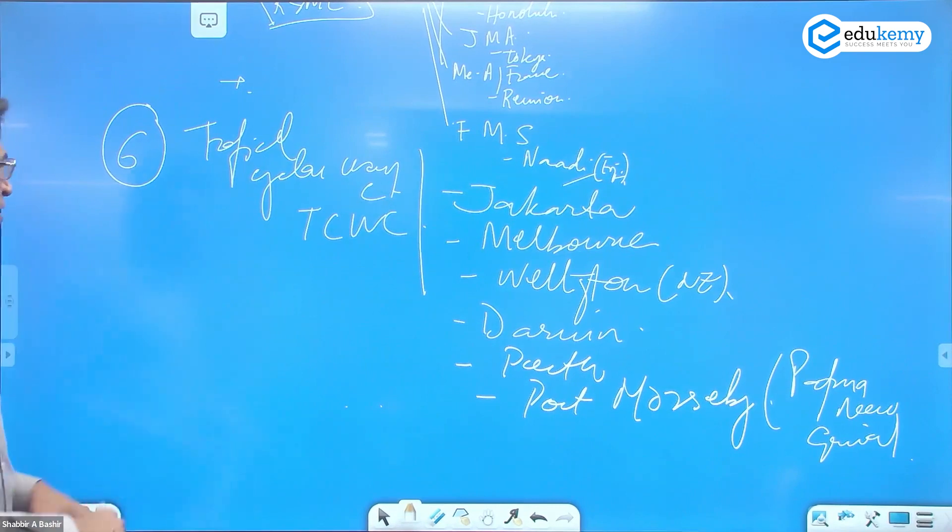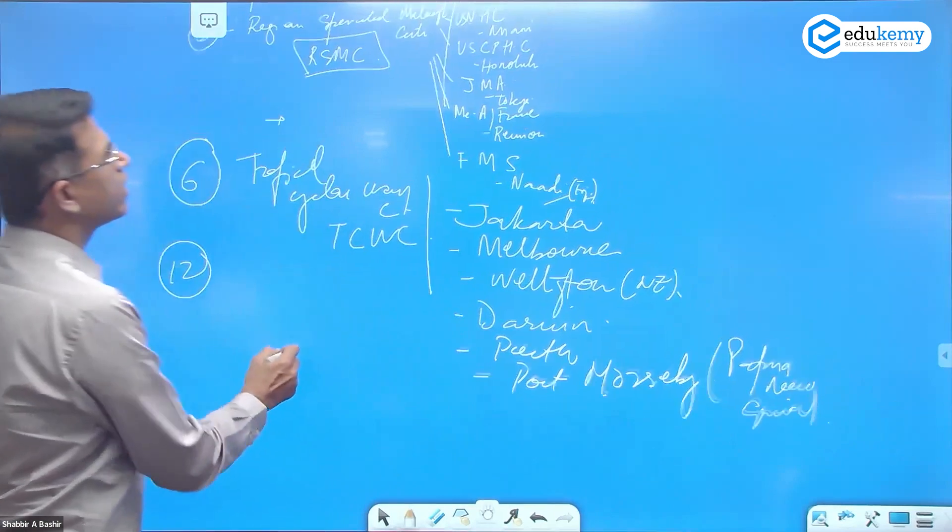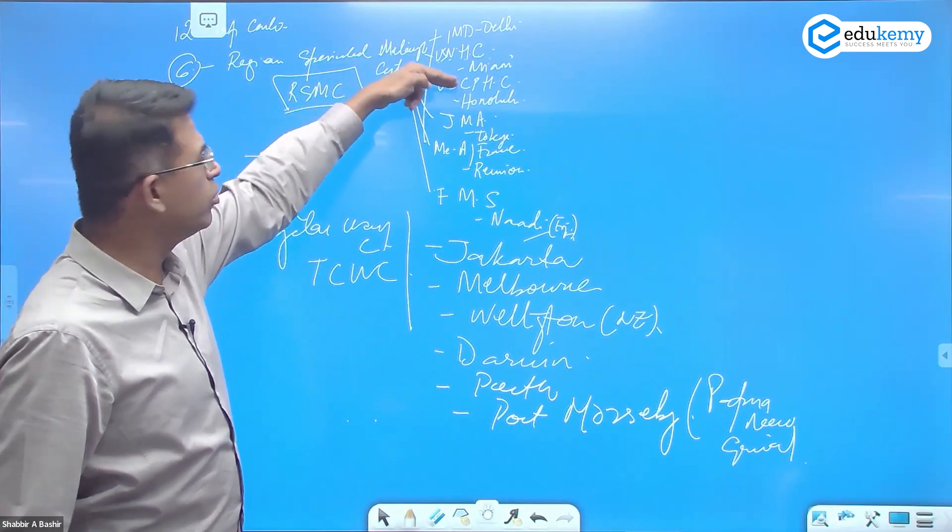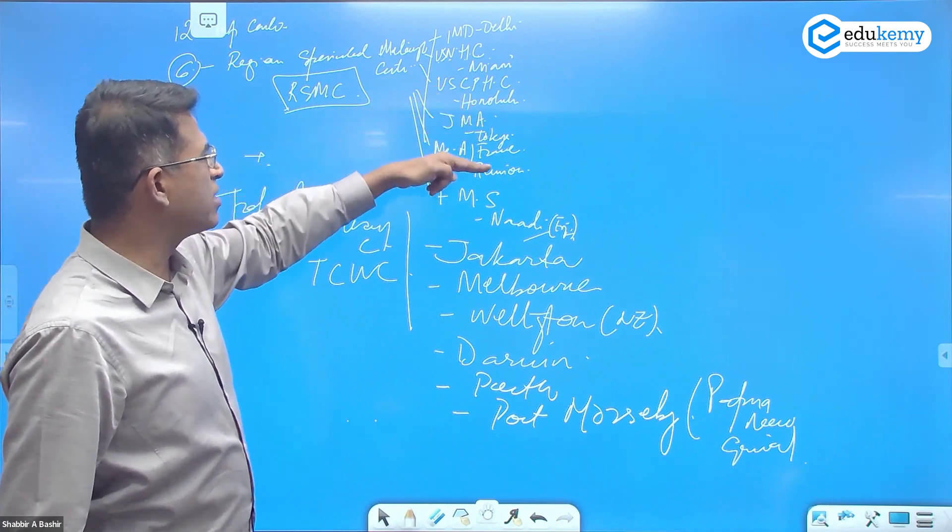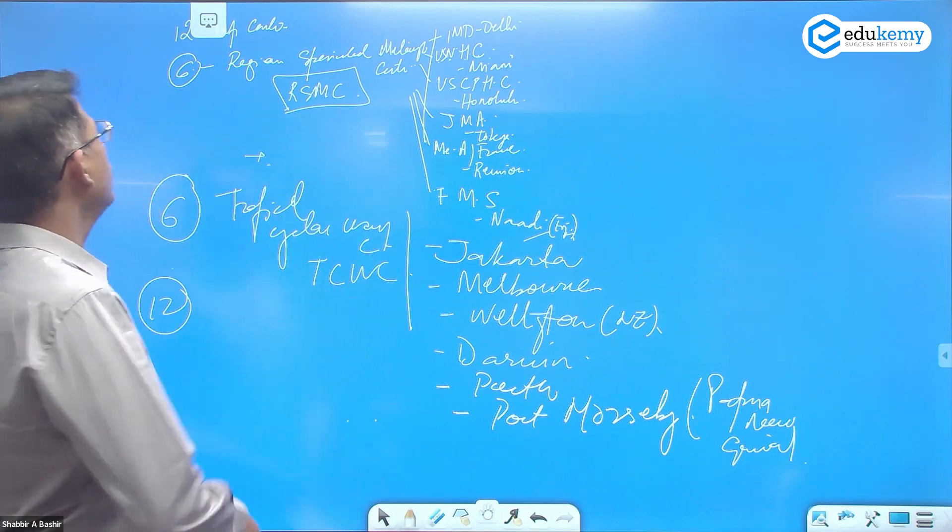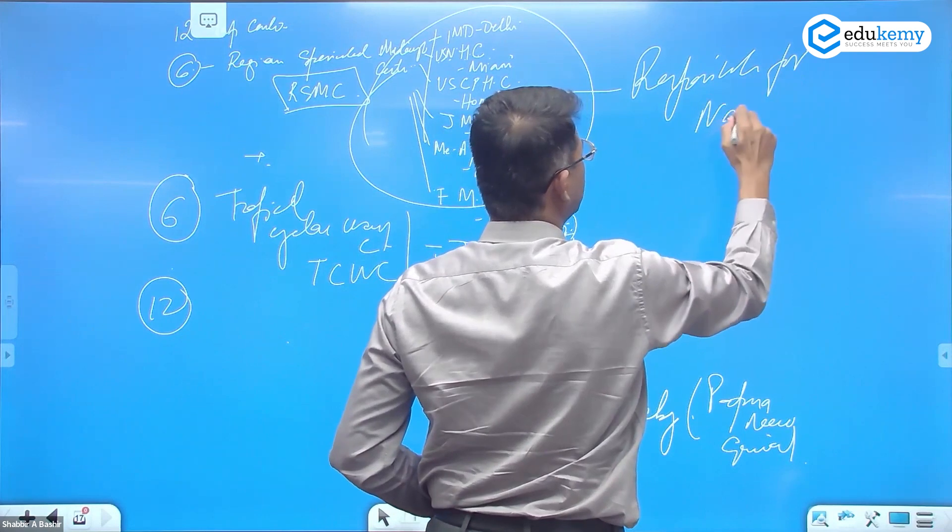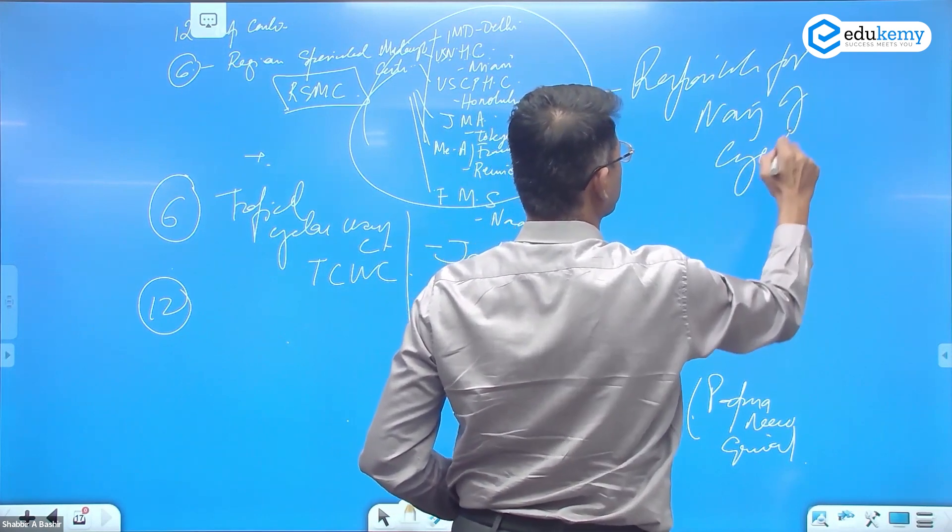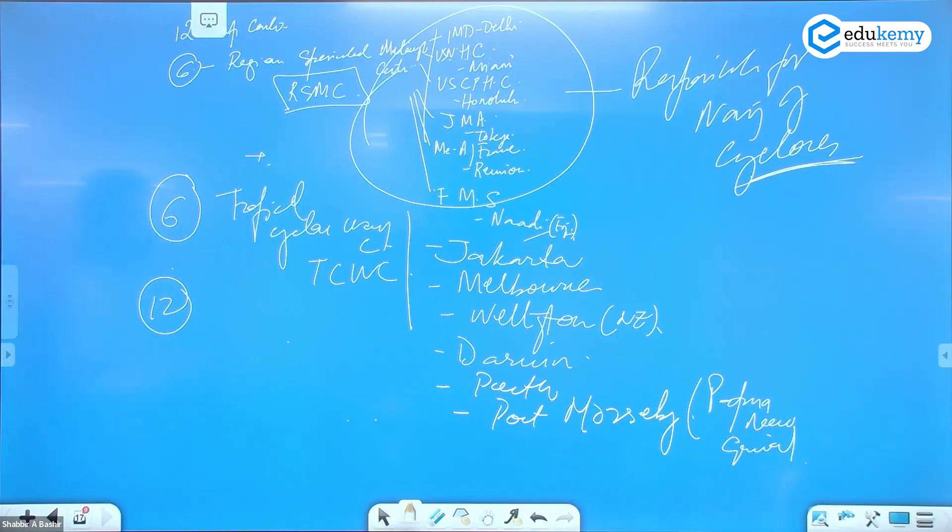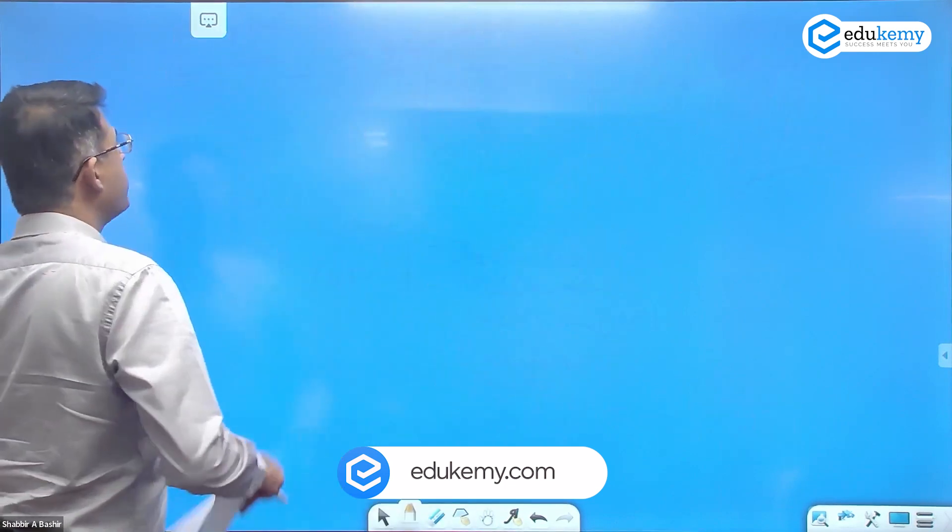So this is 12 centers under WMO. The regional centers are responsible for naming of the cyclones. And each of them represent a zone. IMD Delhi represents North Indian Ocean.